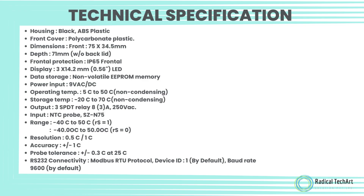Resolution: 0.5 degrees Celsius or 1 degree Celsius. Accuracy: plus or minus 1 degree Celsius. Probe tolerance: plus or minus 0.3 degrees Celsius at 25 degrees Celsius. RS-232 connectivity: Modbus RTU protocol. Device ID: one by default. Baud rate: 9,600 by default.